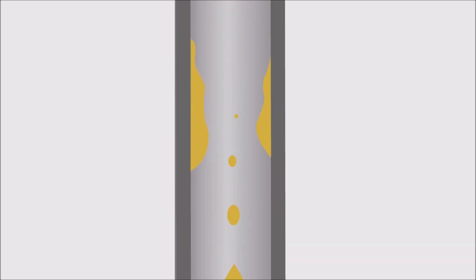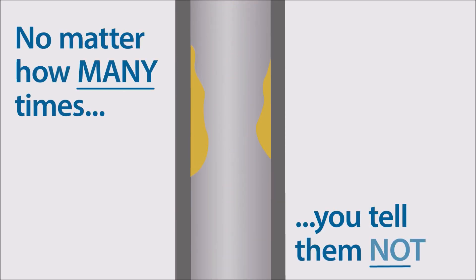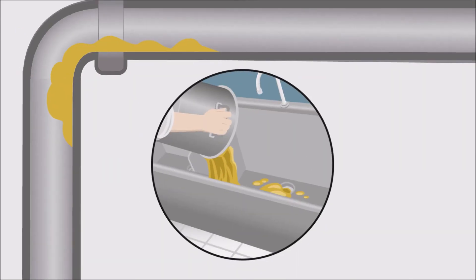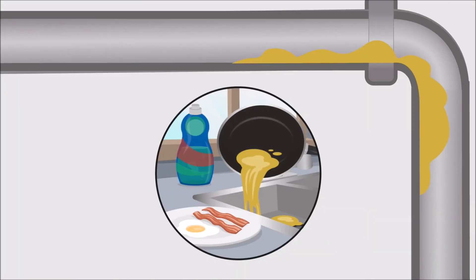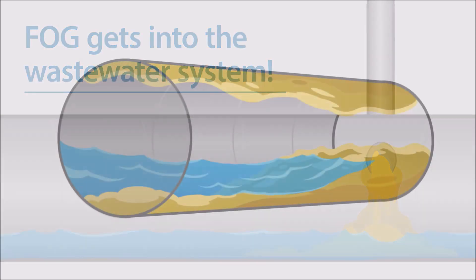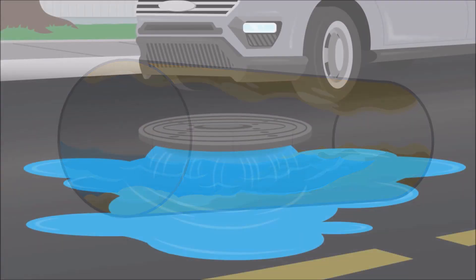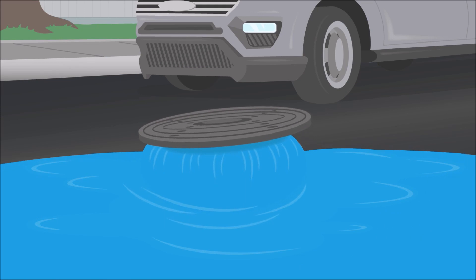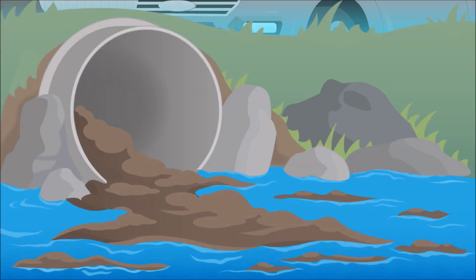The unfortunate truth is no matter how many times you tell them not to, restaurants, businesses, and homeowners still end up putting fats, oils, and grease, known as FOG, down their drains. When FOG gets into the wastewater system, it can build up to create pipe blockages that result in sewer system overflows, damaged infrastructure, and polluted waterways.